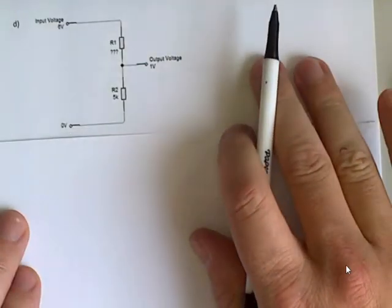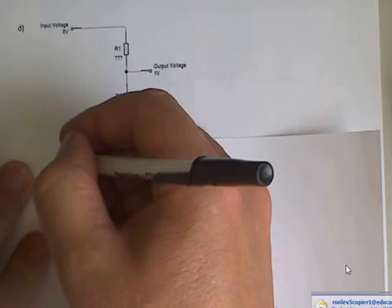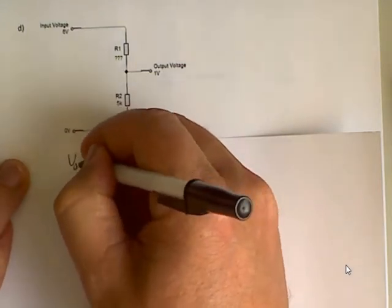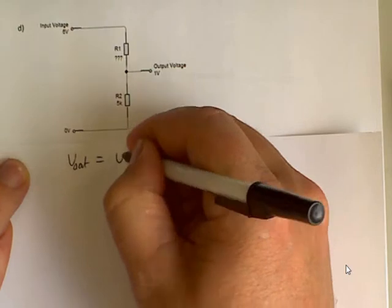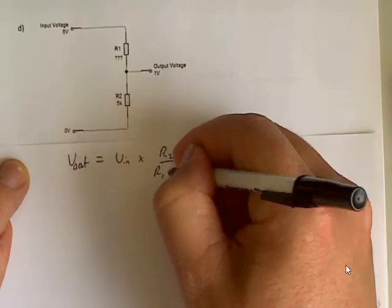This one I think will be a bit easier. So in this circuit we've got an input of 6 volts.